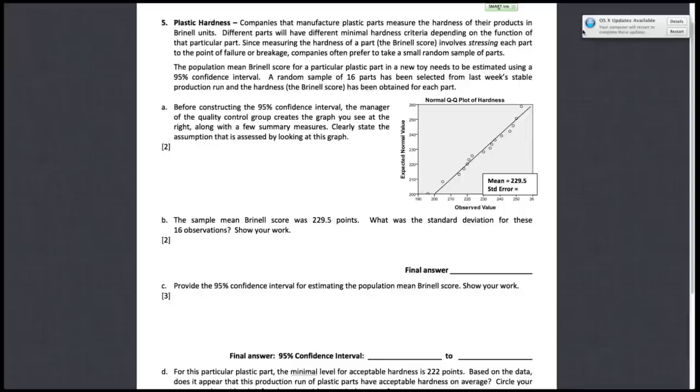All right, question five, plastic hardness. Part A: before constructing the 95% confidence interval, the manager of the quality control group creates a graph that you see at the right along with a few summary measures. Clearly state the assumption that is assessed by looking at this graph.